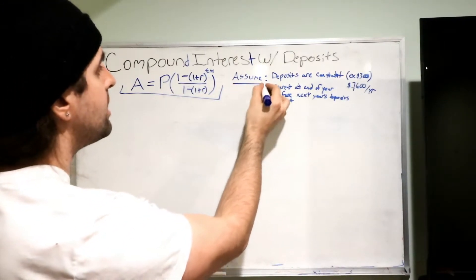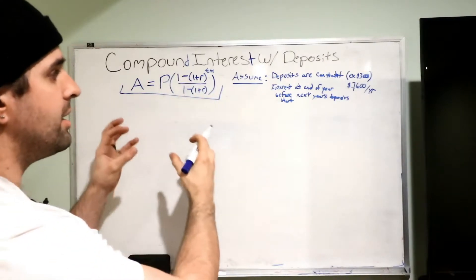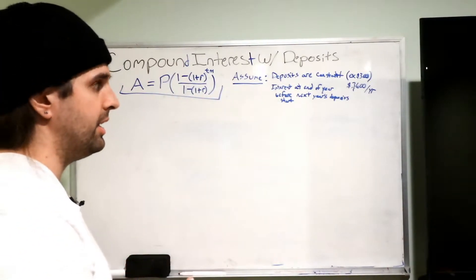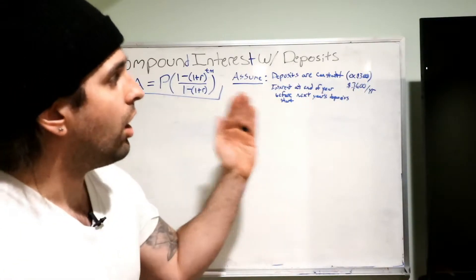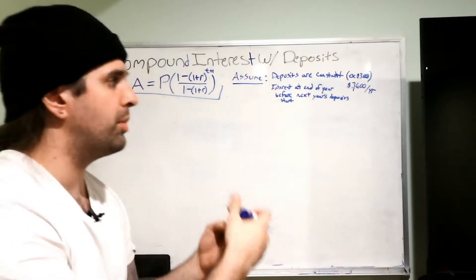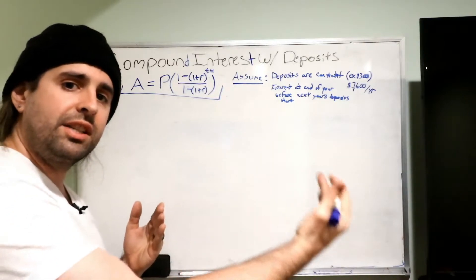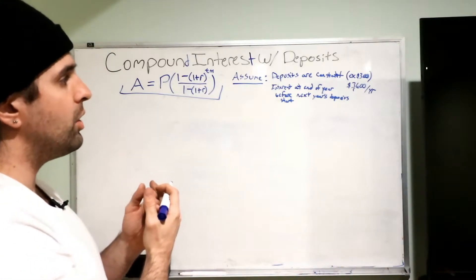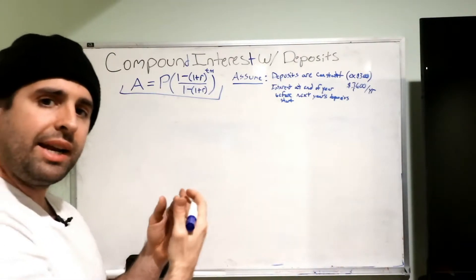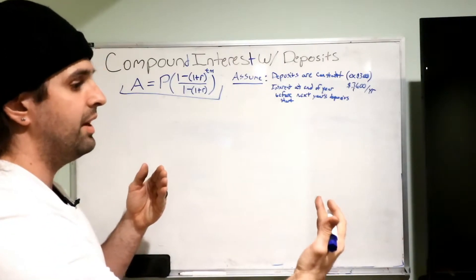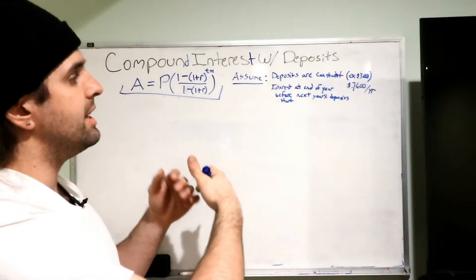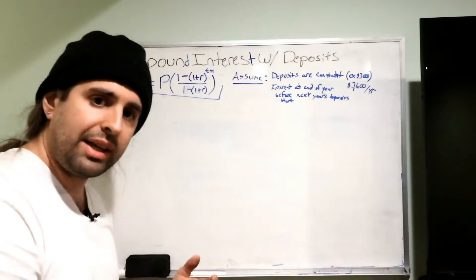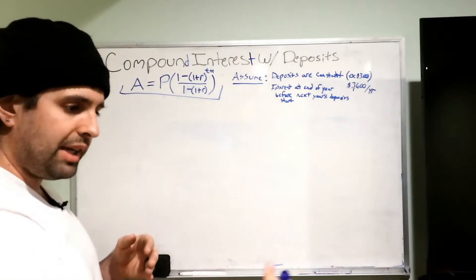So we need assumptions to create the formula appropriately. So the deposits are going to be constant, so like $300 per month and that's going to be $3600 per year. Then we're going to assume that the interest is paid after all those deposits have been added into your account and it's going to be before all the other deposits and then all the other deposits are going to go on.